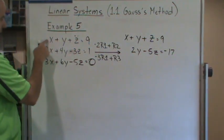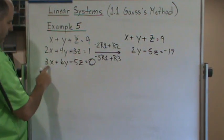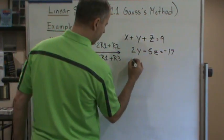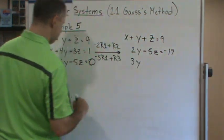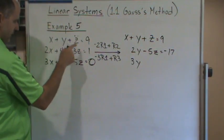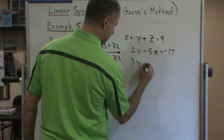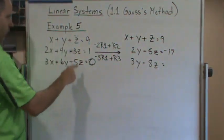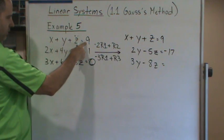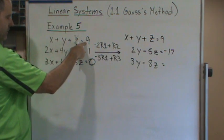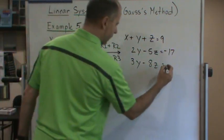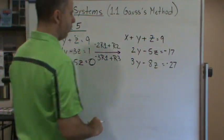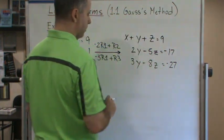For the new row three: negative three times y plus 6y gives 3y; negative 3z minus 5z gives negative 8z; and negative three times 9 is negative 27, plus 0 is negative 27. Now we have our next system of equations to work with.